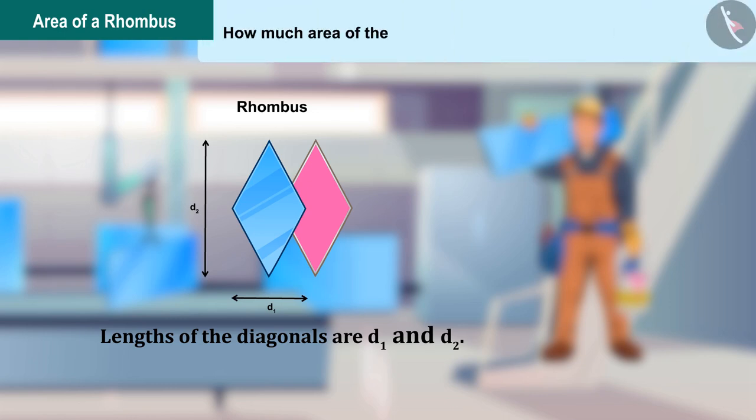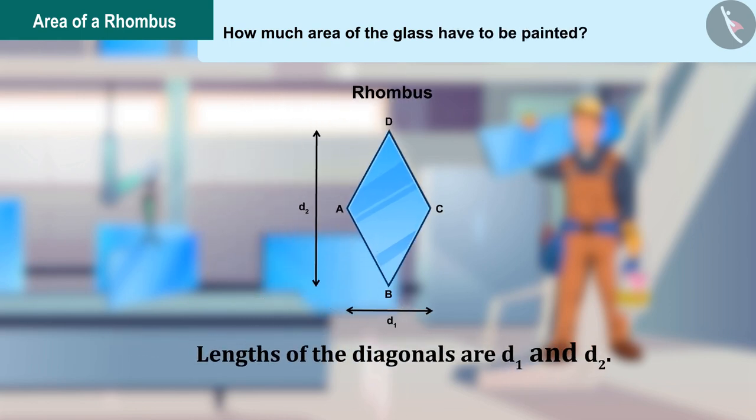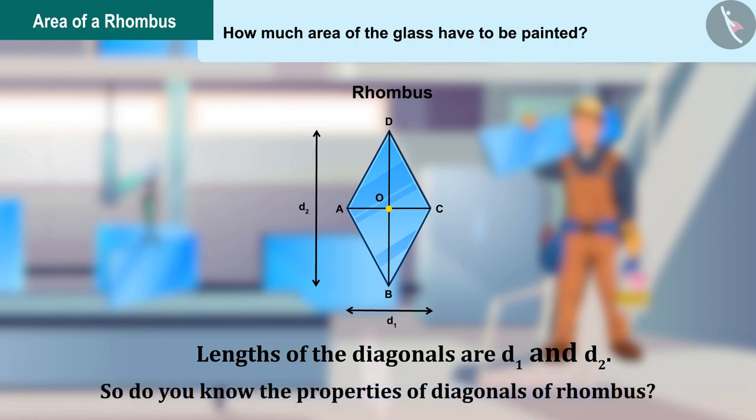Kamlesh joined point C with A and point B with D and called its intersection point as O, from which the diagonals AC and BD are passing through. So do you know the properties of diagonals of rhombus?